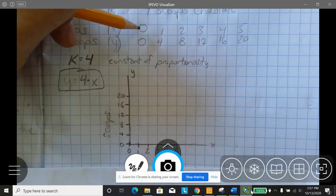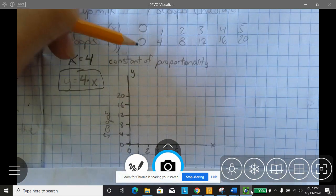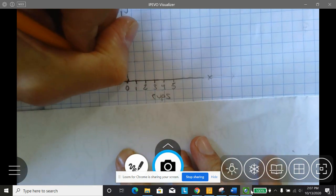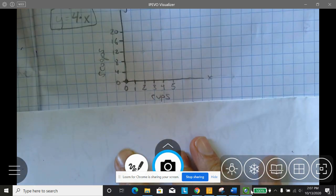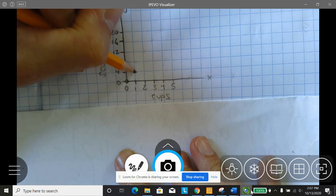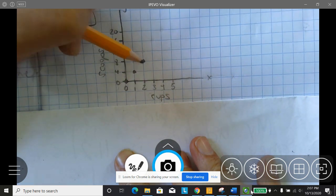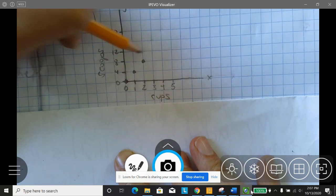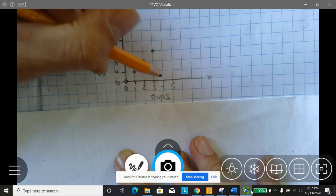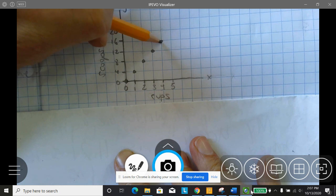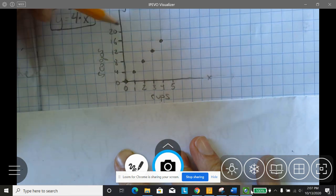So I know that when I have zero scoops, I have zero cups. That would be this point right here. When I have one cup, I have four scoops. When I have two cups, I have eight scoops. When I have three cups, I have 12 scoops. When I have four cups, I have 16 scoops. And when I have five cups, I have 20 scoops.